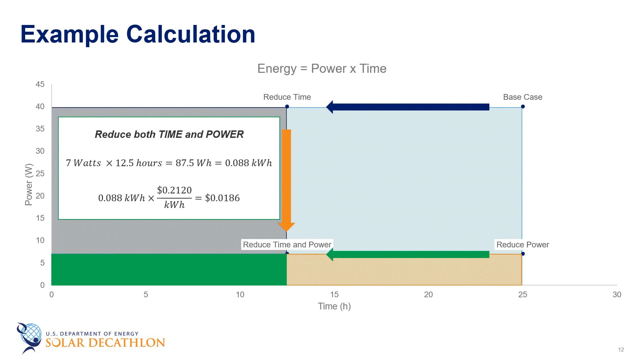And the final strategy for saving energy is to do both, reduce both the power and the runtime. In this case, we'll take our seven watts and we multiply it by 12.5 hours to see that the cost is now 1.86 cents to operate the light bulb, which is really the most energy efficient solution at the end of the day.